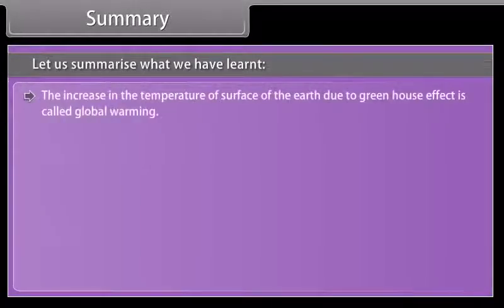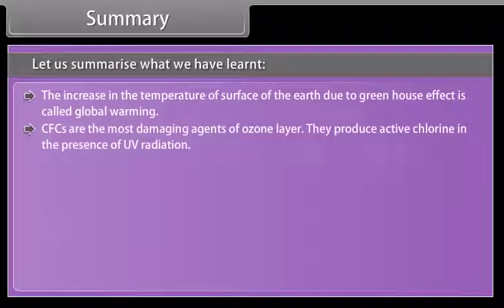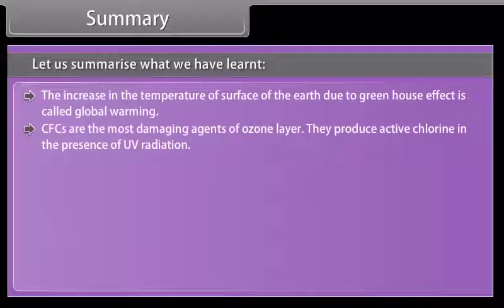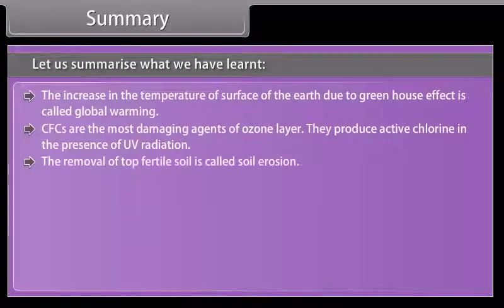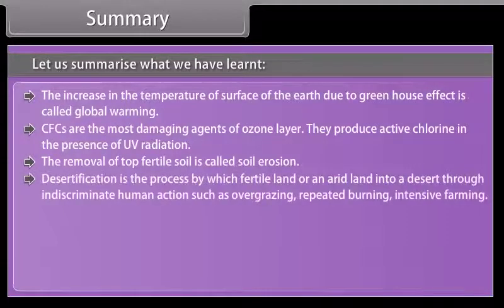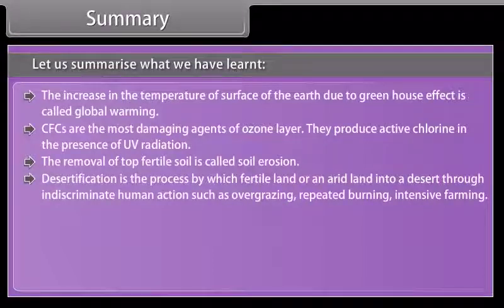The increase in the temperature of the surface of the earth due to the greenhouse effect is called global warming. CFCs are the most damaging agents of the ozone layer; they produce active chlorine in the presence of UV radiation. The removal of top fertile soil is called soil erosion. Desertification is the process by which fertile land turns into a desert through indiscriminate human actions such as overgrazing, repeated burning, and intensive farming.